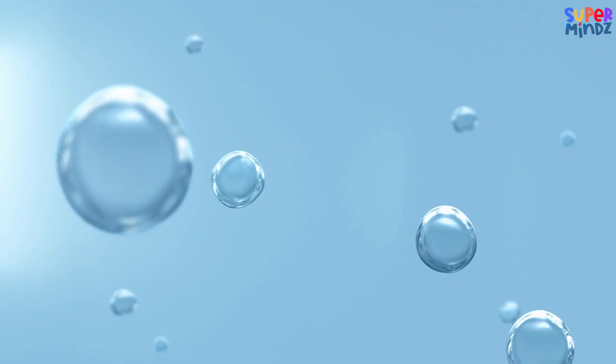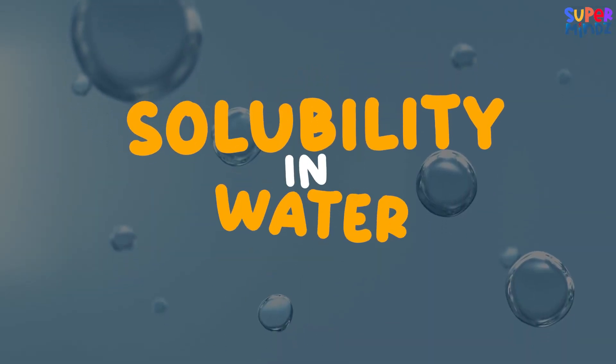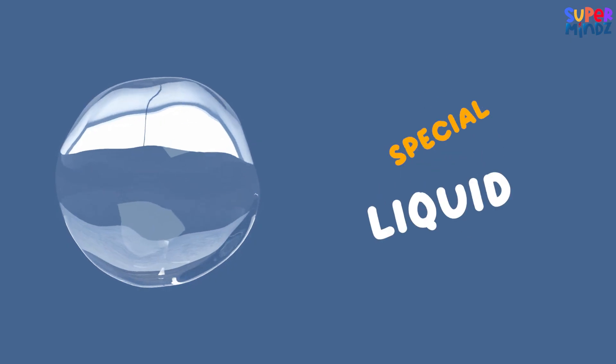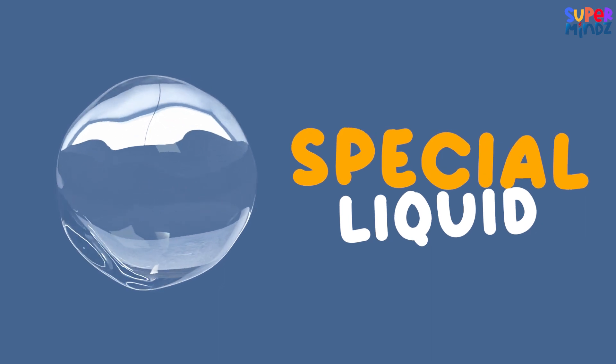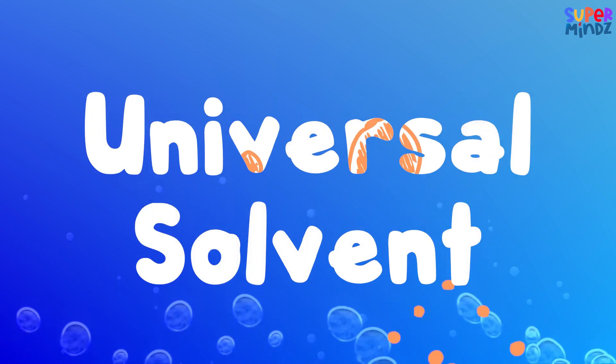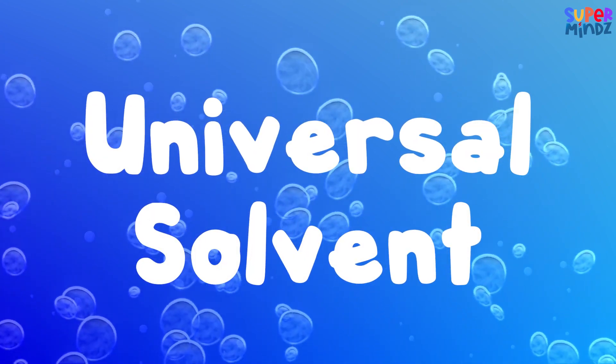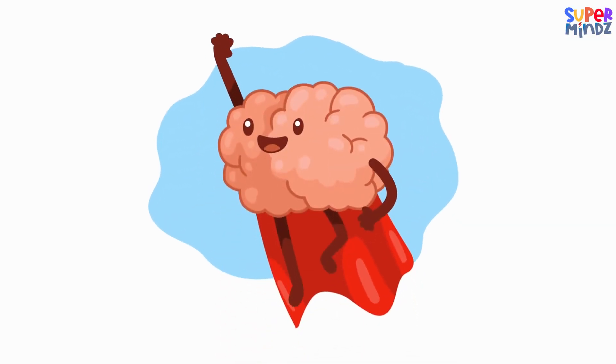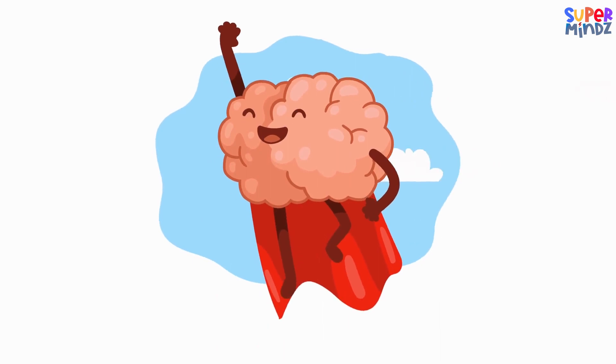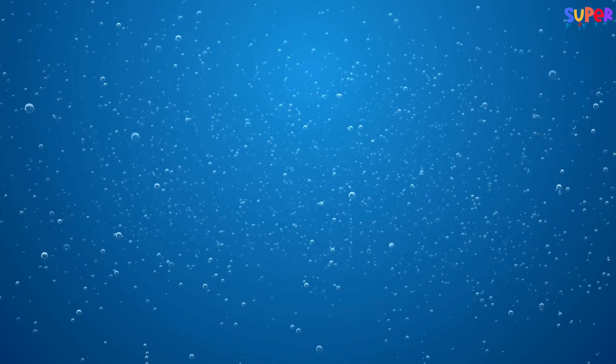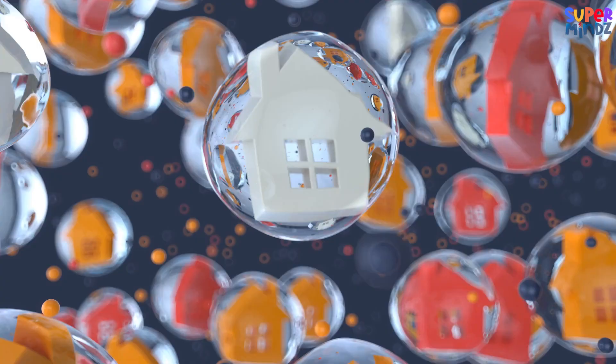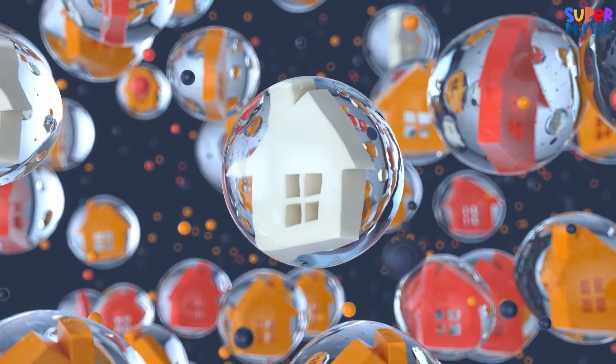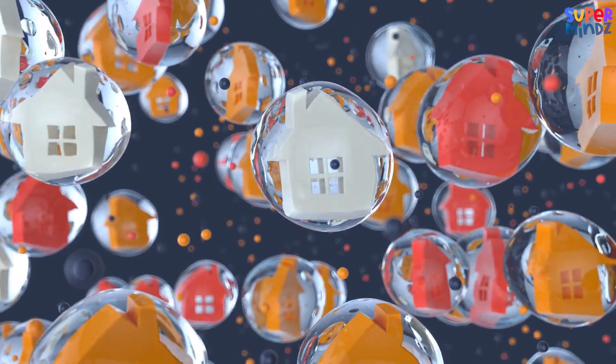Hi kids, let's learn about solubility in water. Water is a very special liquid. It's often called the universal solvent because it has the amazing ability to dissolve many different substances. Think of it like a superhero that can make things disappear. When something dissolves in water, it means the tiny particles of that substance mix evenly throughout the water.